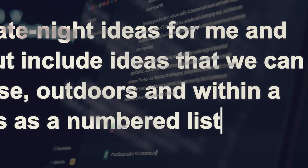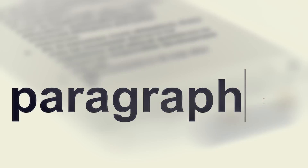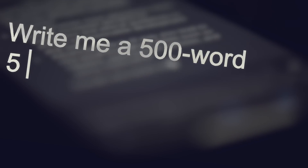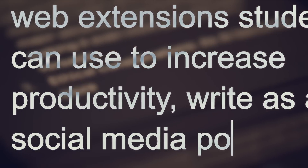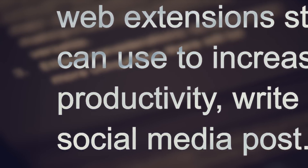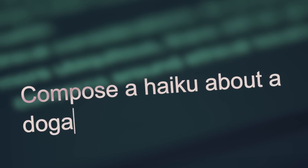Even when you're giving context, remember to keep things simple and concise. Be clear about what you want. Next, remember to be specific. Tell the AI what format you want your answers in, whether it's a numbered list, paragraph, or a blurb below a certain word count. Say whether you want this for a social media post, an email, or even a haiku.